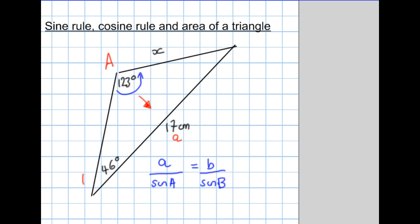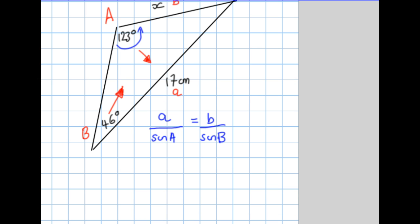We know this angle here, 46 degrees, so I'll call that B, and we'll call the unknown I'm trying to find, the side opposite it, lowercase b. Now let's use the formula. I put the values in that I know, so I've got 17 over sine 123 degrees equals x, the thing I'm trying to find, over sine 46 degrees.